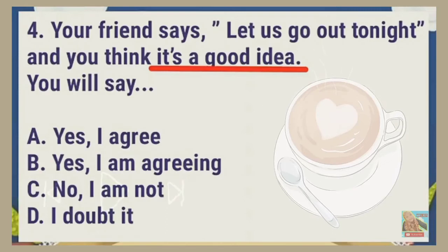Number four. Your friend says: 'Let us go out tonight,' and you think it's a good idea. You will say: A. Yes, I agree. B. Yes, I'm agreeing. C. No, I'm not. or D. I doubt it.